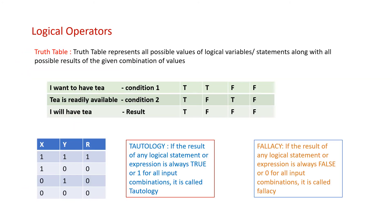Now let us try to understand truth tables with an example. I want to have tea — condition 1. Tea is readily available — condition 2. The result is: will I have tea? When condition 1 is true and condition 2 is true, the result is true. When condition 1 is true but condition 2 is false — tea is not readily available — the result becomes false.